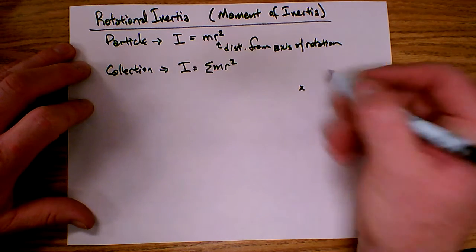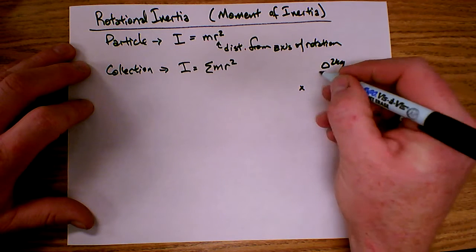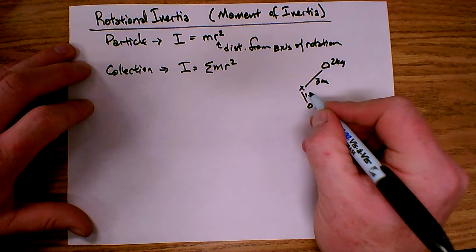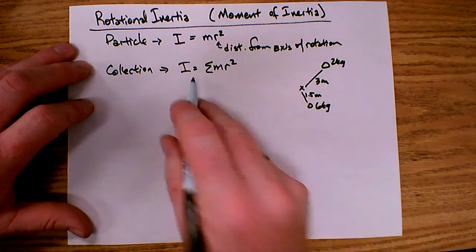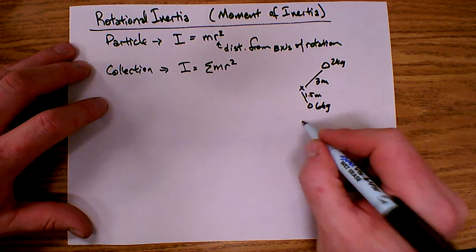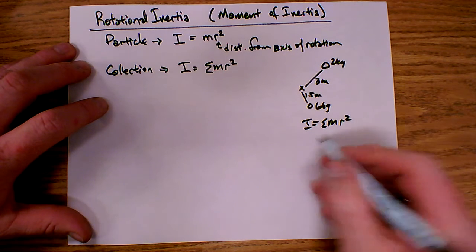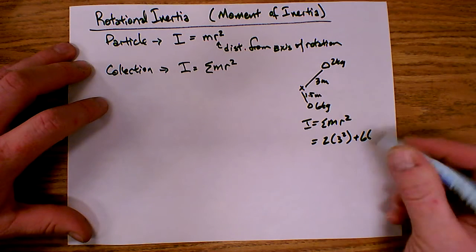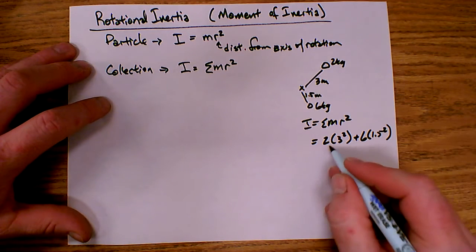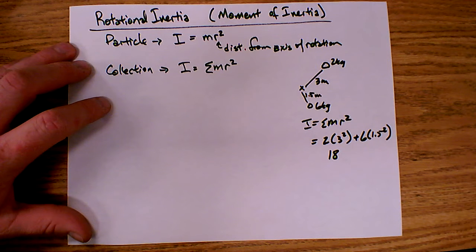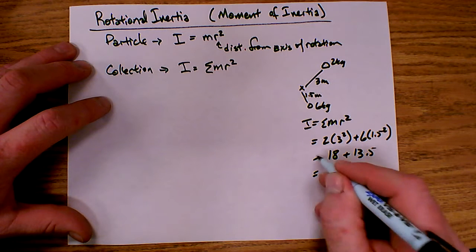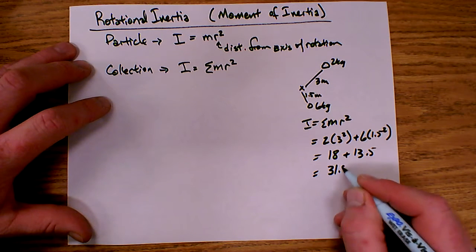For example, if I have an axis of rotation here, and I have a 2 kilogram particle located 3 meters away, and a 6 kilogram particle located 1.5 meters away, and I want to find the total inertia of this system — the inertia would be the sum of the mr squareds. So that would be 2 times 3 squared plus 6 times 1.5 squared. That's 2 times 9 is 18, and 6 times 2.25 is 13.5. Adding those together, I get 31.5.